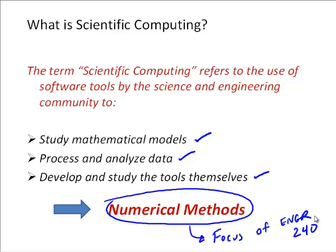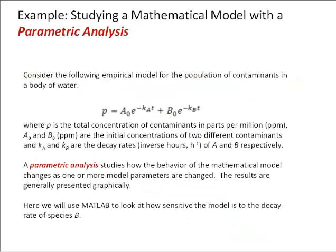Let's look at an example problem to get a better feel for what we mean by scientific computing. In this example, we'll be studying a mathematical model with a parametric analysis. Consider the following empirical model for the population of contaminants in a body of water. Here we have P, the total concentration of contaminants in parts per million, equal to A₀e^(-kₐt) + B₀e^(-kᵦt), where A₀ and B₀ are initial concentrations of two different contaminants A and B, and kₐ and kᵦ are their decay rates.